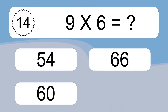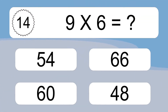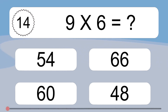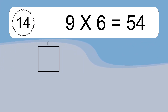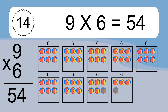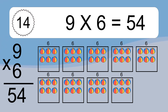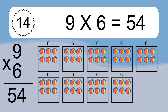9 times 6 equals what? 9 times 6 equals 54. We have 9 boxes, and each box has 6 colorful balls inside. If you count all the balls in all the boxes together, you will have 9 times 6 balls. This equals 54 balls.